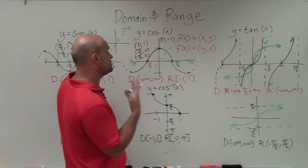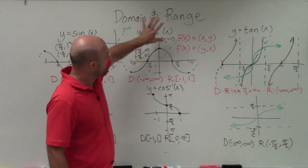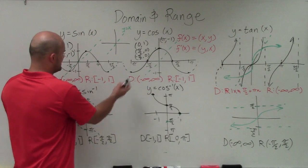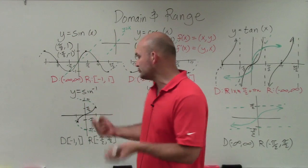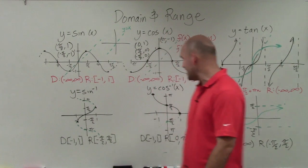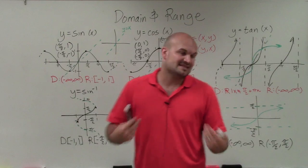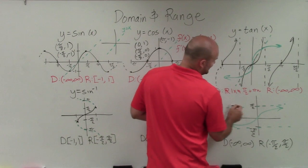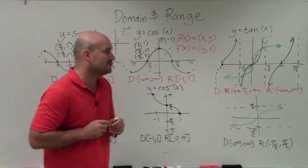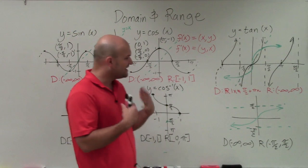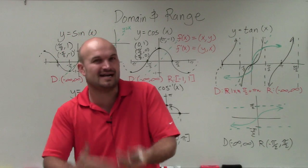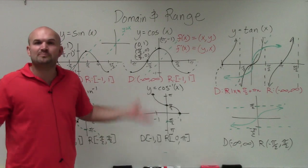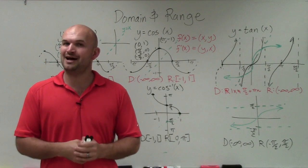That is how you find the domain and range of the inverse trigonometric functions. The easiest approach is to look at the domain and range of sine, cosine, and tangent, then swap them. Remember: for inverse sine, we restrict the range from negative π/2 to π/2; for inverse cosine, we restrict the range from 0 to π; and for inverse tangent, we restrict from negative π/2 to π/2. By restricting the range, plugging in inverse sine, cosine, or tangent gives you exactly one value, preserving the function definition.